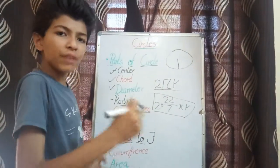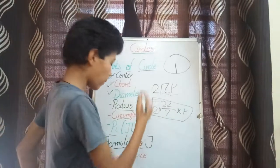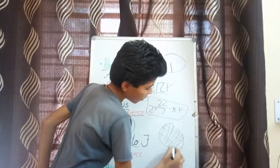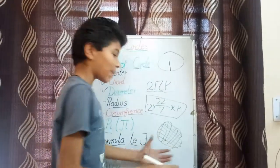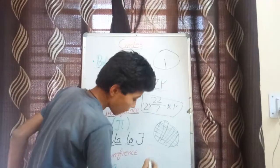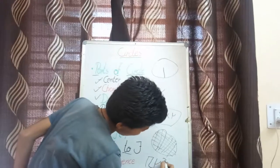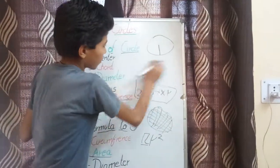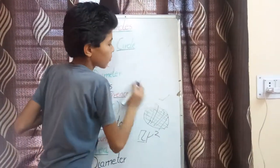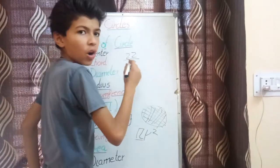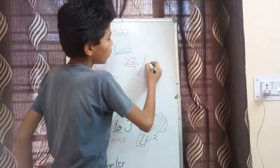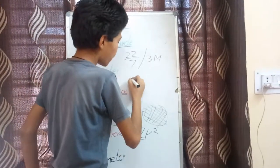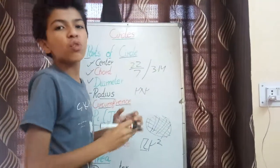How can we find the area? The formula to find the area is πr². What is the area? Area is the surface, or the surface amount covered by an object. We can find this using the formula πr², where π stands for 22/7 or 3.14, and r² means r multiplied by r, where r stands for the radius.